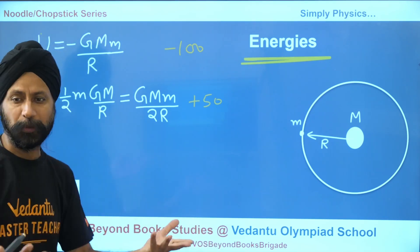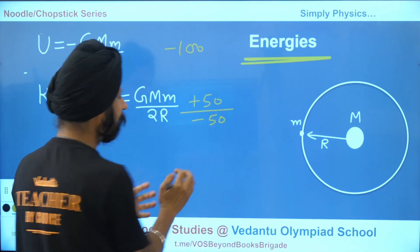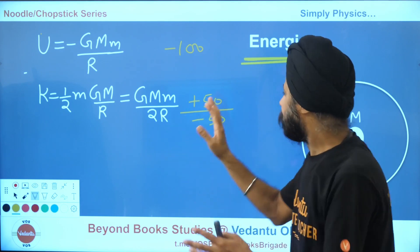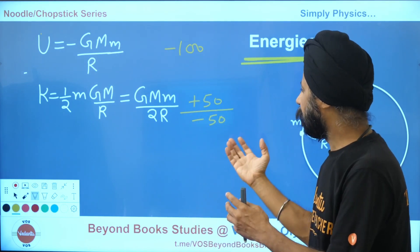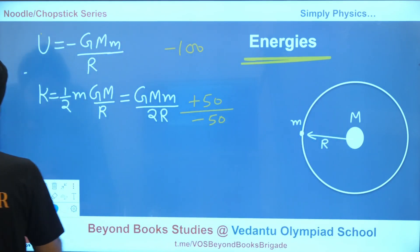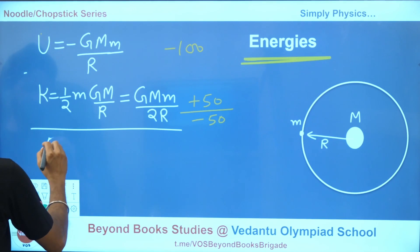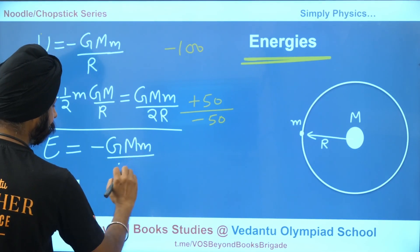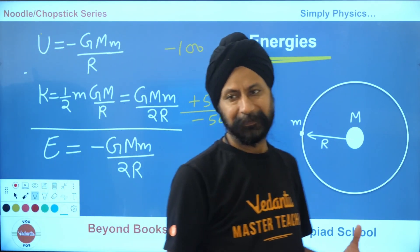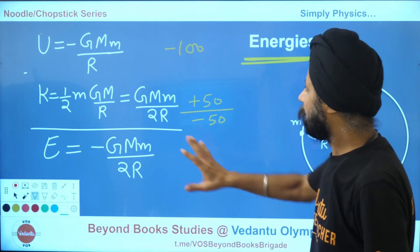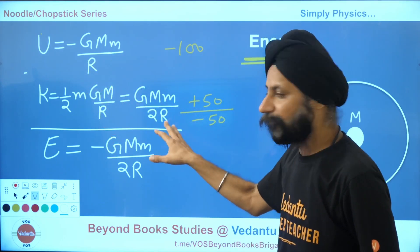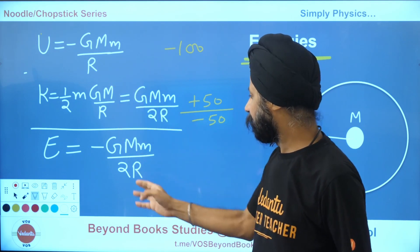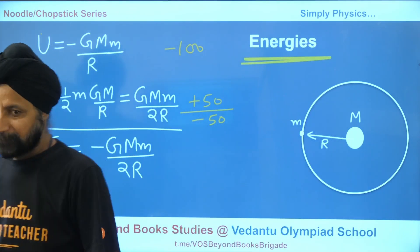Total energy equals potential plus kinetic energy. Adding −GMm/R and +GMm/2R gives a total energy of −GMm/2R. So total energy is negative, and its magnitude equals the kinetic energy — or equivalently, it's half the magnitude of the potential energy. The chopstick method makes this beautifully symmetric and easy to understand.